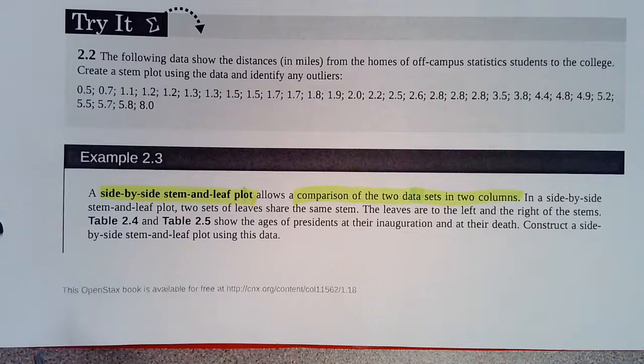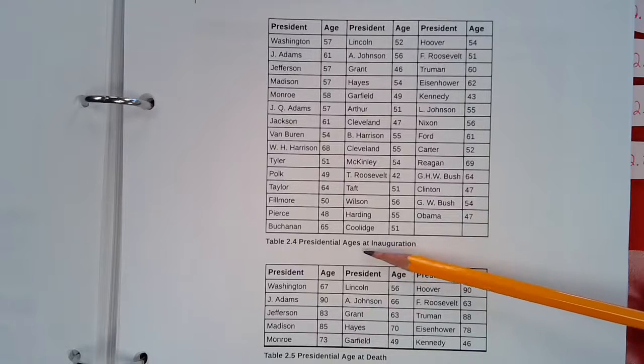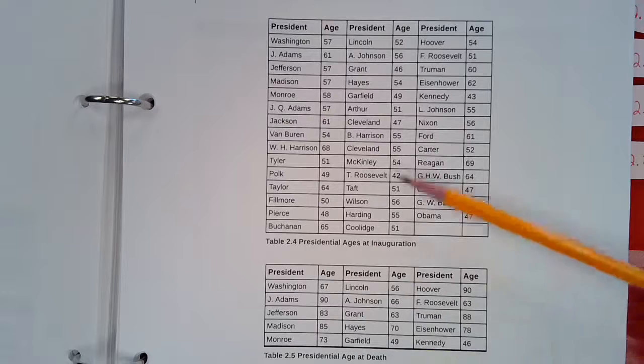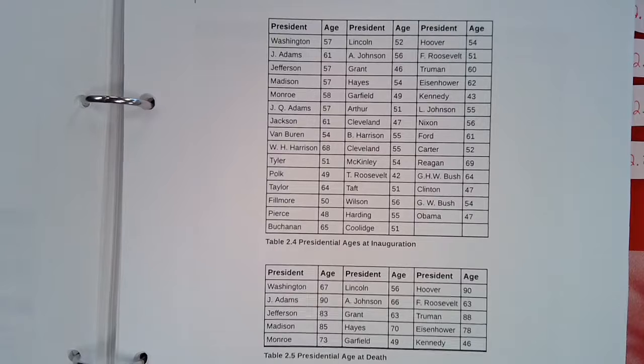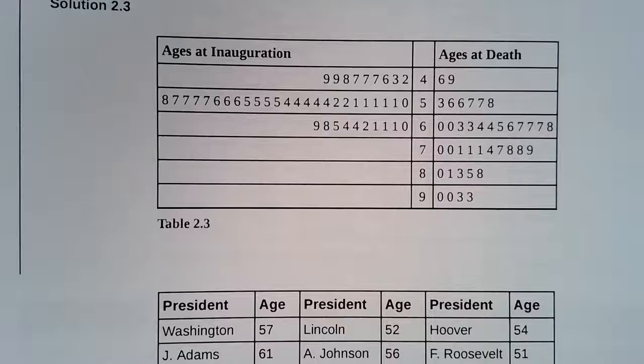We can also use a side-by-side stem and leaf plot to compare two data sets in two different columns. And they have a pretty good example talking about presidents and their inauguration age and their death age. Alright, so this top table is showing the presidential age at inauguration and this bottom table is showing the presidential age at death. And so we can take this data and create a stem and leaf plot that compares the ages of inauguration to the age of death.